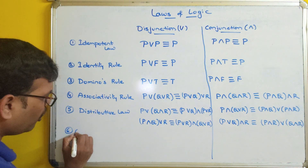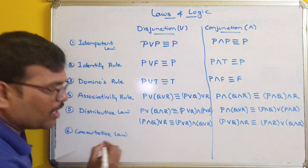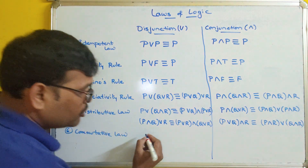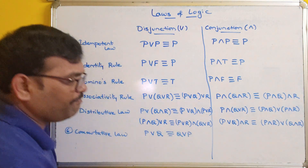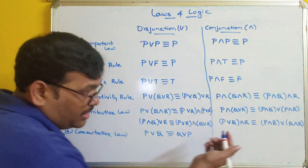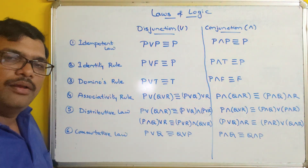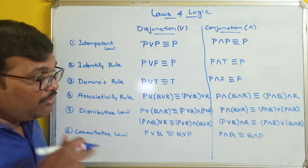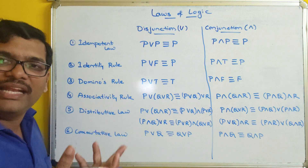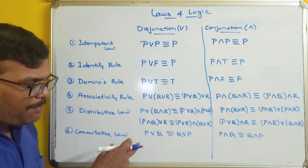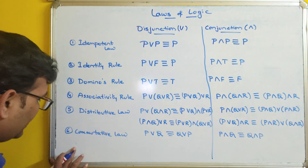The sixth law is the commutative law. p∨q ≡ q∨p, and p∧q ≡ q∧p. If you apply the truth table for p∧q and q∧p you get the same result, and the same holds for disjunction.